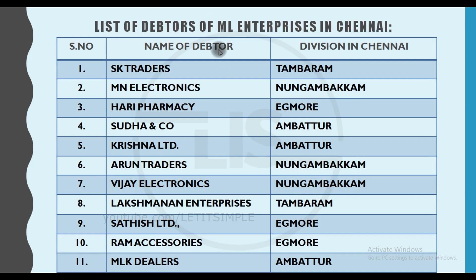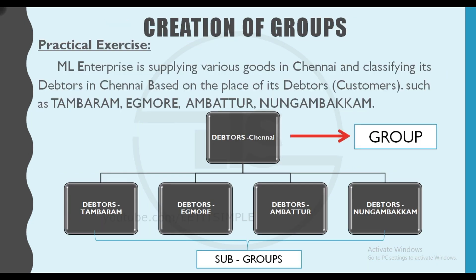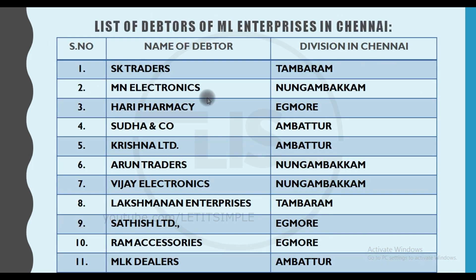Here is a list: SK Traders, MN Electronics, Harry Pharmacy, etc. They are classified as a division in Chennai. If they are classified at a mass level, they become confused. The first thing we have to do is create a group. We would create a group in the debtors — SK Traders, Lakshman in the debtors group, MN Electronics, Arun Traders, and Vijay Electronics.